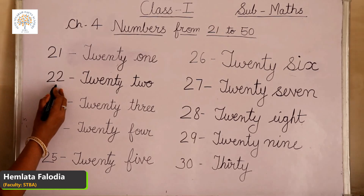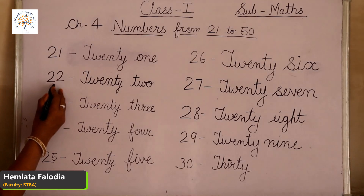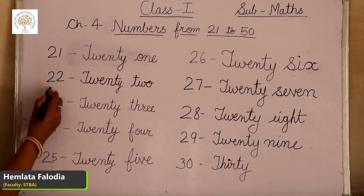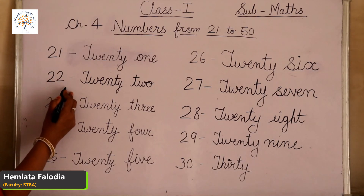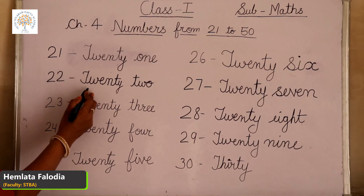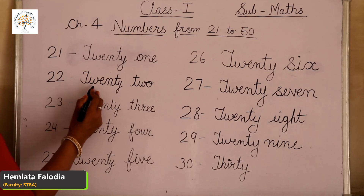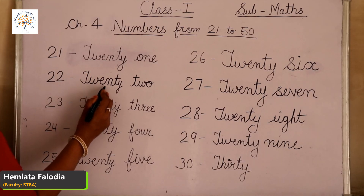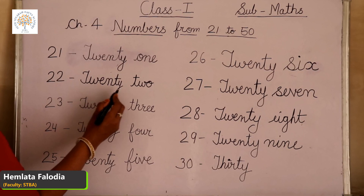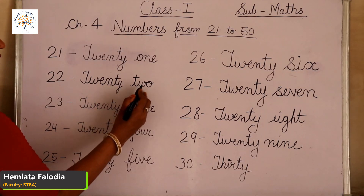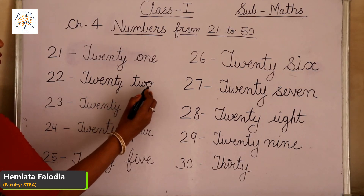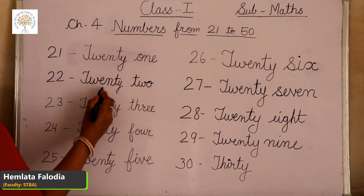Now come to the next, which is 22. Expanded form of 22: 20 plus 2 is 22. Number name: T-W-E-N-T-Y, 20, and T-W-O, 2. This means 22.